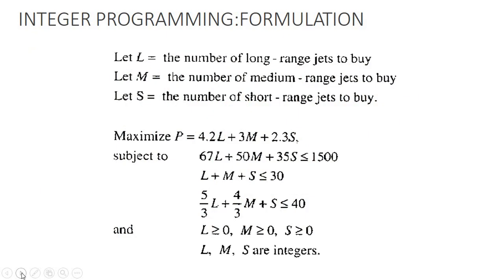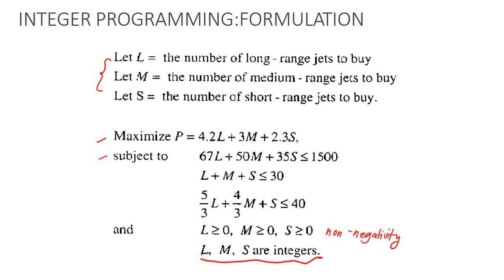For this example, we have three variables along with the objective function and constraints. If you observe, we have our non-negativity constraints, and the values of variables L, M, and S must be integers.